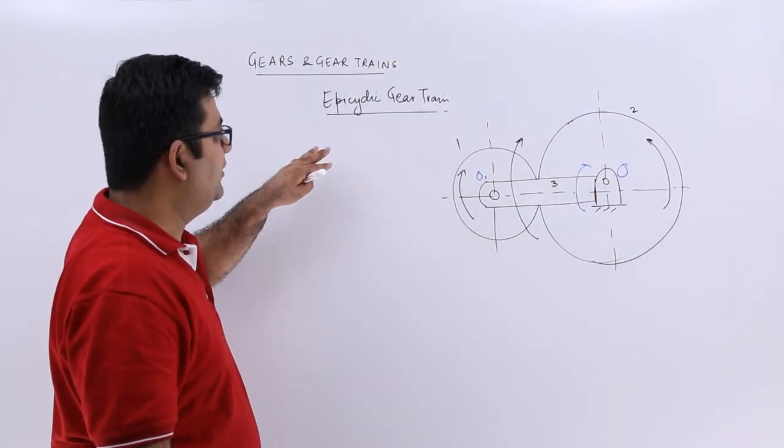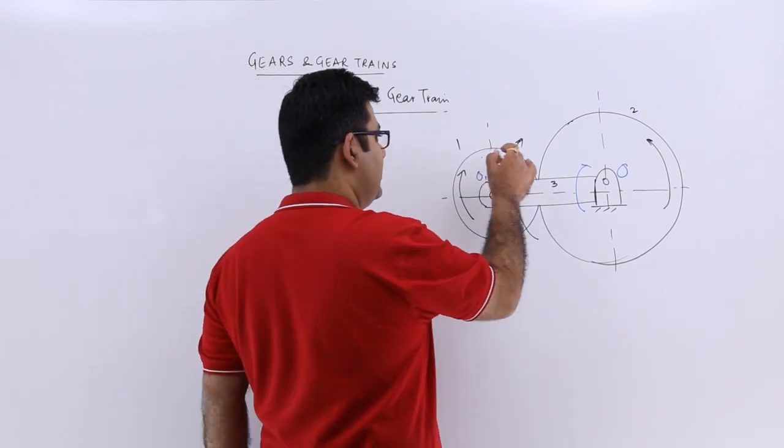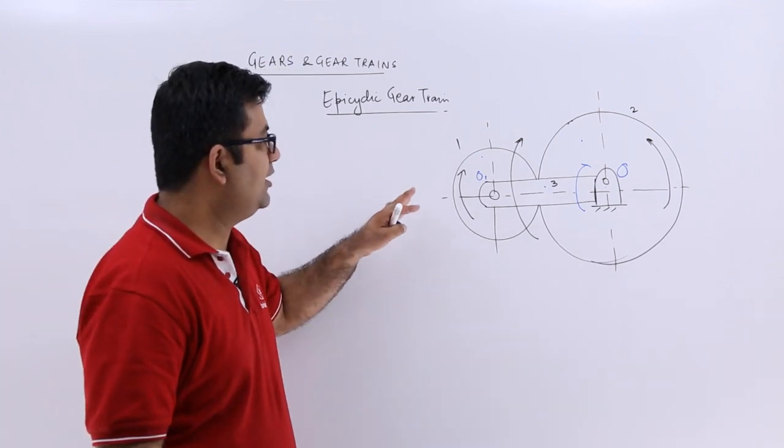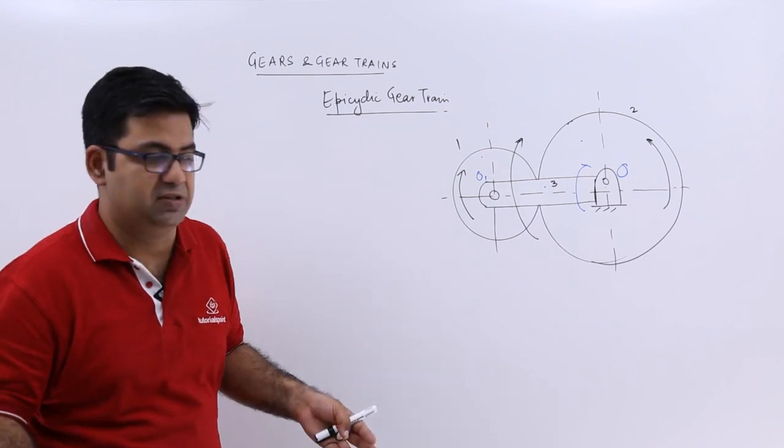So the main purpose of having an epicyclic gear train is that you can fix these individual components one by one to get different gear ratios and different configurations. For example,